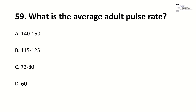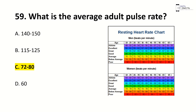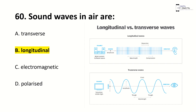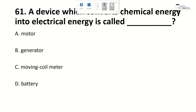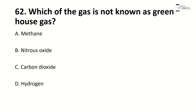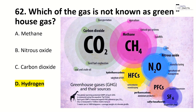What is the average adult pulse rate? Right answer is C, 72 to 80. Sound waves in air are — right answer is B, longitudinal. A device which converts chemical energy into electrical energy is — right answer is D, battery. Which of the following gases is not a greenhouse gas? Right answer is D, hydrogen. Greenhouse gases include CO2, methane, nitrous oxide, and others, but not hydrogen.